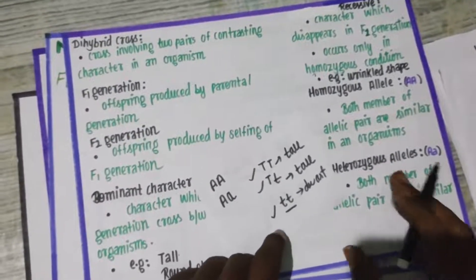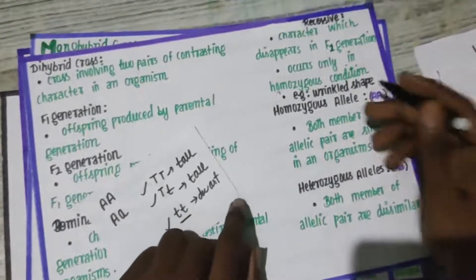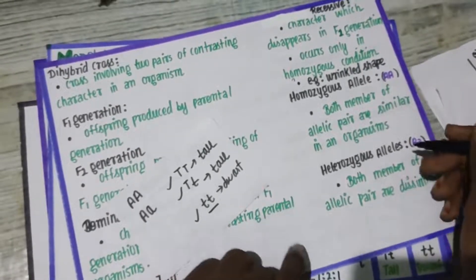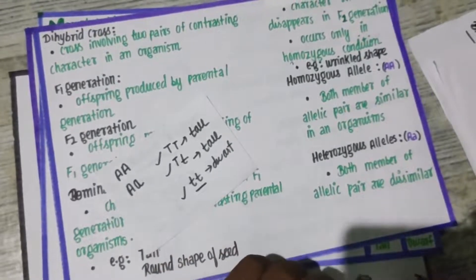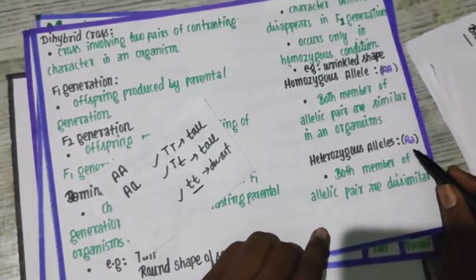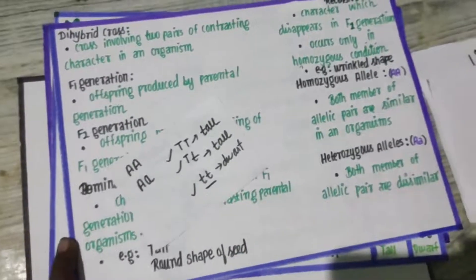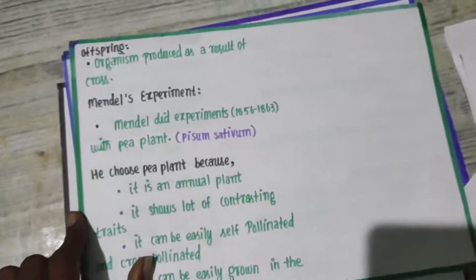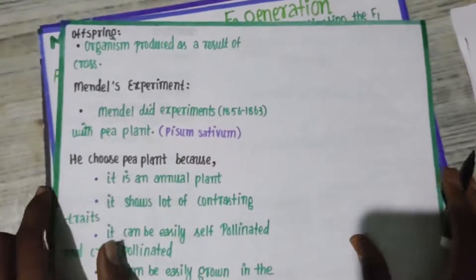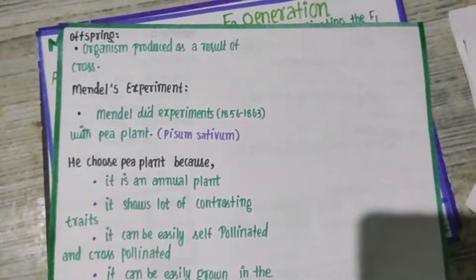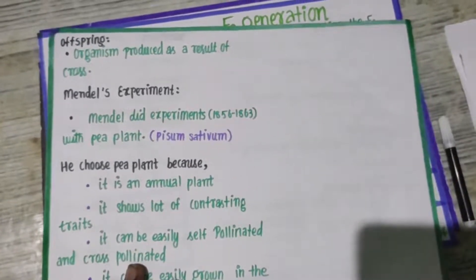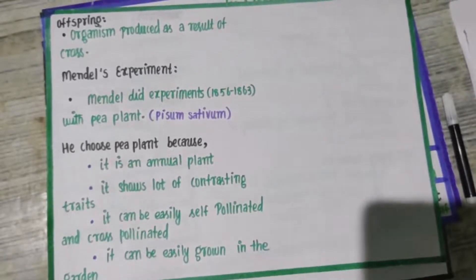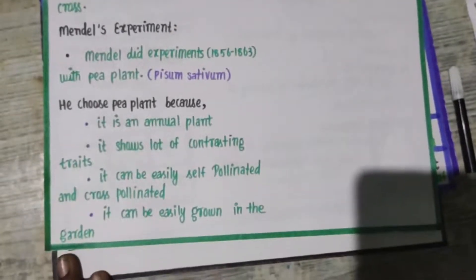In homozygous condition, both members of the allele pair are the same. If it is homozygous dominant, the dominant character is expressed; if homozygous recessive, the recessive character appears. We have one more term: offspring. Offspring is the organism produced as a result of a cross — a new individual. In the next video we will discuss why Mendel chose the pea plant. Until then, bye bye!